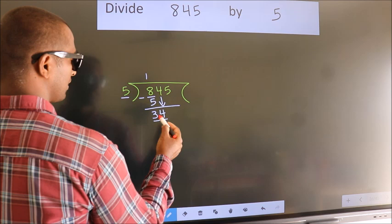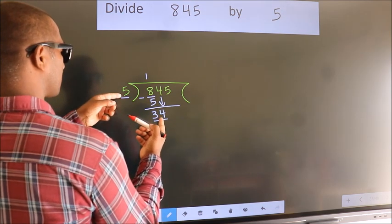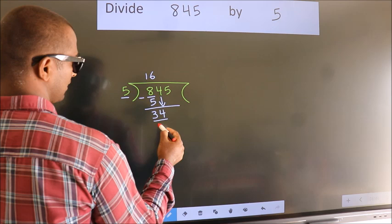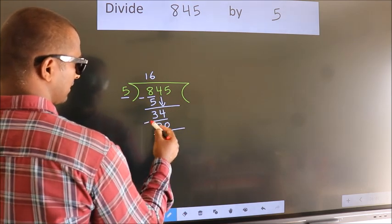Now we have 34. A number close to 34 in the 5 times table is 5 times 6, which equals 30. We subtract and get 4.